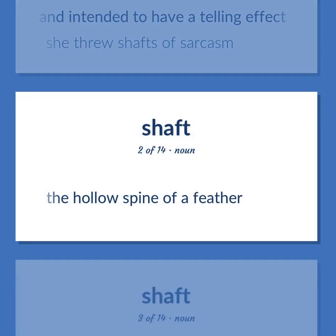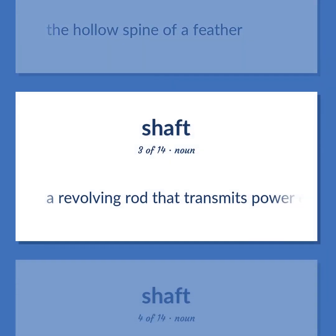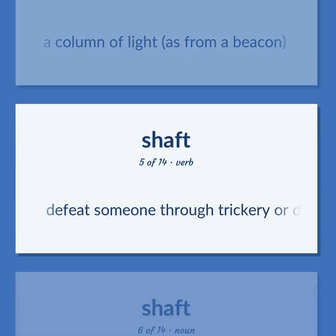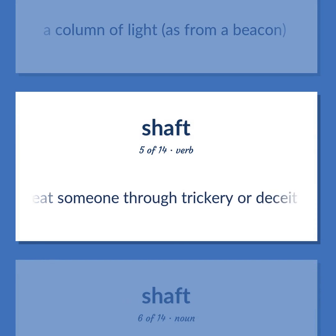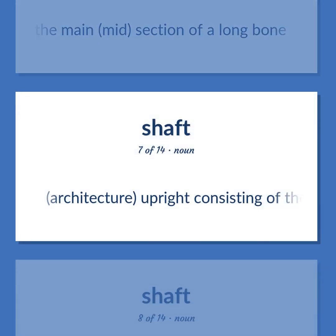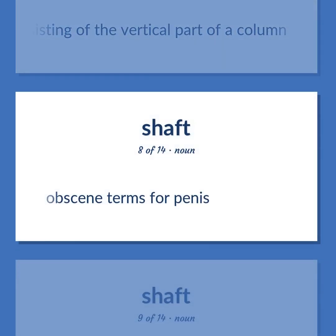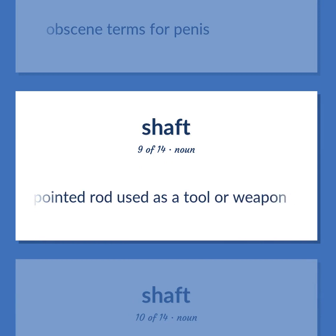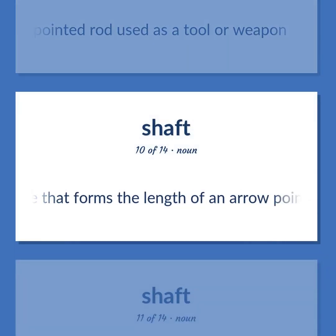The hollow spine of a feather. A revolving rod that transmits power or motion. A column of light, as from a beacon. Defeat someone through trickery or deceit. The main mid-section of a long bone. Architecture: upright consisting of the vertical part of a column. Obscene terms for penis. A long pointed rod used as a tool or weapon. A line that forms the length of an arrow pointer.